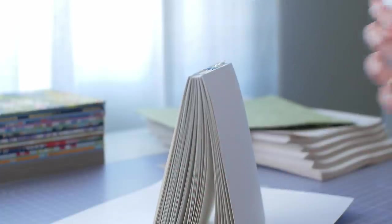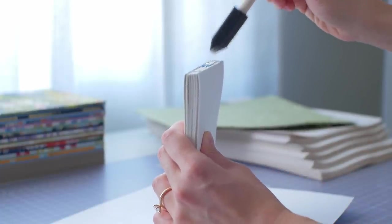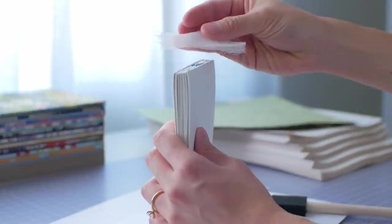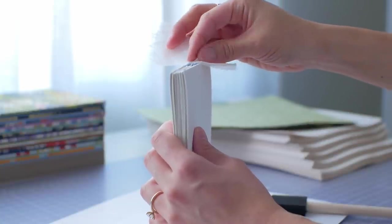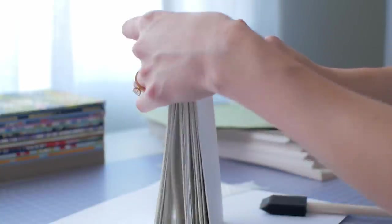This time for the spine, instead of tissue paper, I'm using cheesecloth to reinforce it. And instead of covering up the French links, I am gluing the cheesecloth next to them.